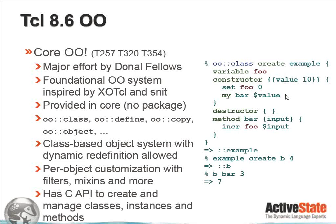The standard commands are in the OO namespace: oo::class, oo::define, oo::copy. On the right-hand side you see a simple example: we create an example class with a variable, a constructor, a destructor, and methods. You instantiate it with 'example create B', giving it an initial value of 4, which returns object B. Then you can run the bar method on object B. It is a class-based object system with dynamic redefinition, and per-object customization is possible with both filters and mixins. There is good documentation in the 8.6 docs, and a full C API for creation and management of classes and instances.